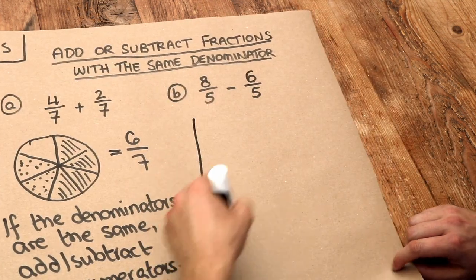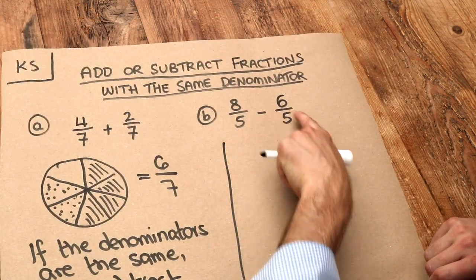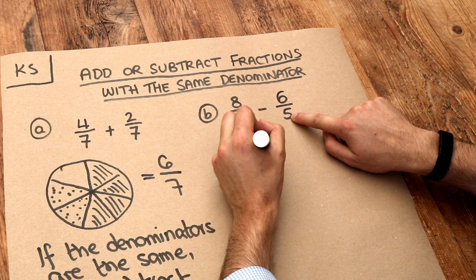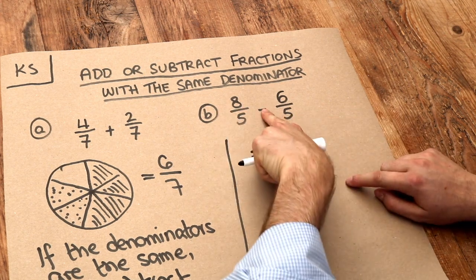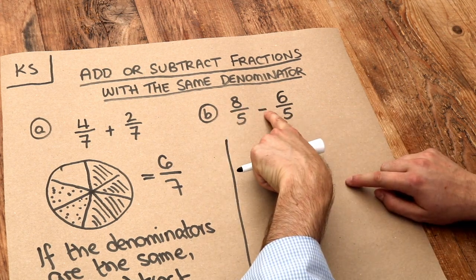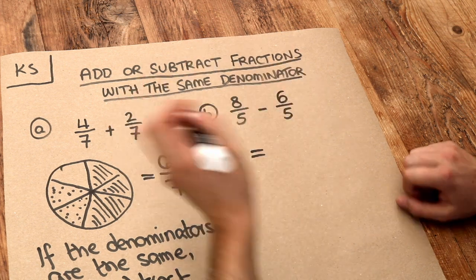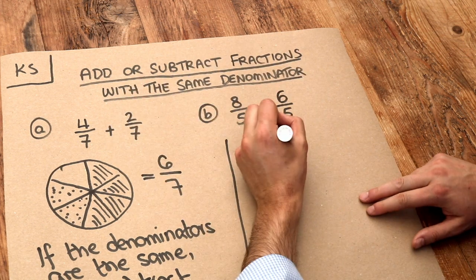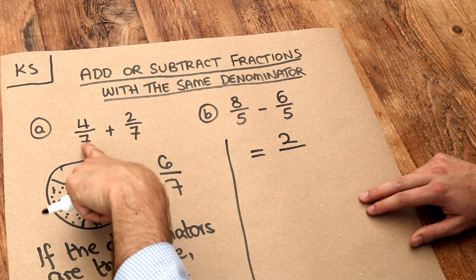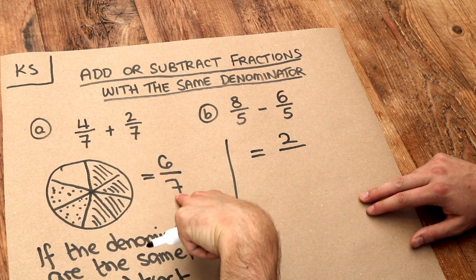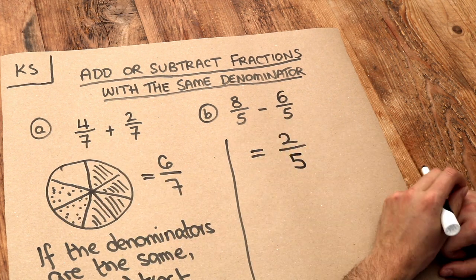What about this second one? Eight fifths minus six fifths — well, they have the same denominator, so we just need to subtract the numerators. What's eight minus six? It's two. So we get two, and the denominator stays the same. You can see the seven stayed as seven, and that five stays as five.